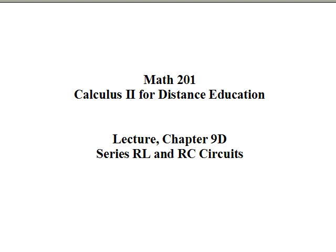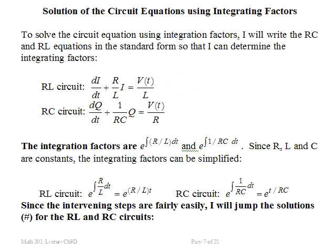This is lecture 9D on the solution of the RL and RC circuits with constant voltage. We're going to solve the circuit equations that we started off with. First we put them in the standard form: dy/dt plus some A times Y equals B. You can see both the RL and the RC circuits expressed in that standard form.